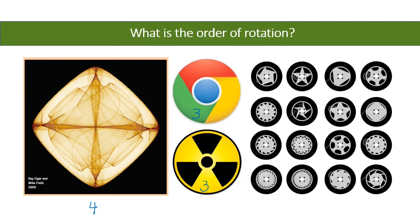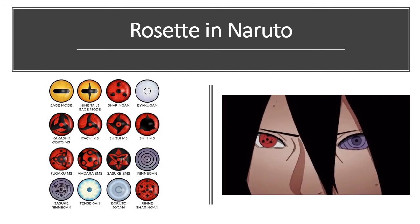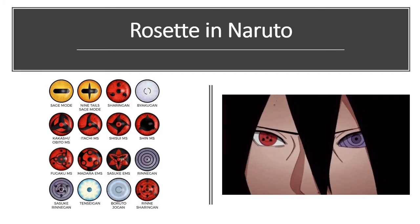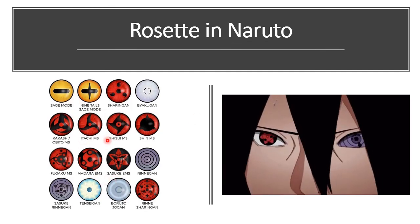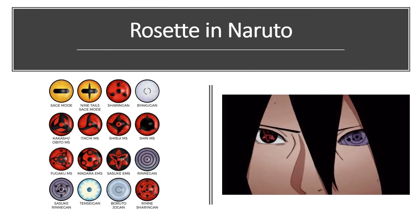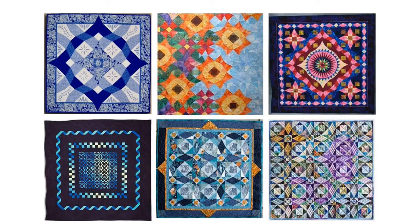If you're watching Naruto and you look at the eyes in the video, those patterns are actually all rosette patterns. Some more examples of rosette patterns — the rosette pattern here is just this one. Very nice rosette patterns.